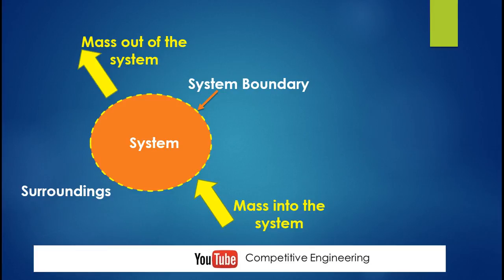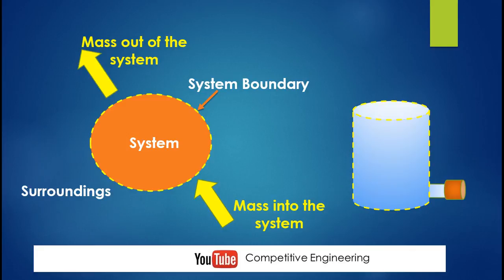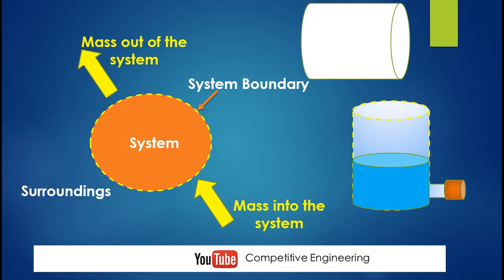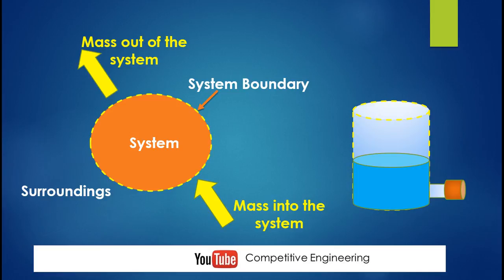I will explain this concept with a simple example. Consider a jar with an opening at the bottom right side, covered with a lid — this is our system. Everything outside is the surroundings. Consider a jar containing liquid in the surroundings. Now I am pouring that mass of liquid into the system, meaning the mass is moving from surroundings into the system.